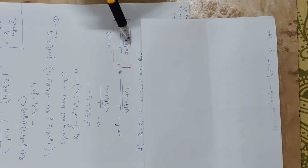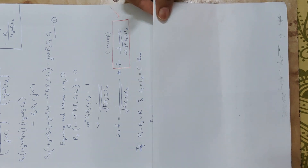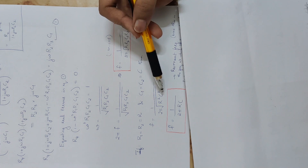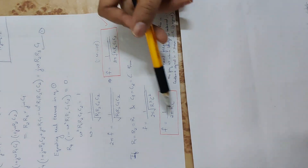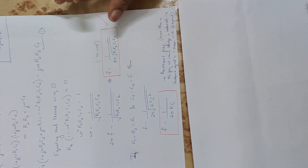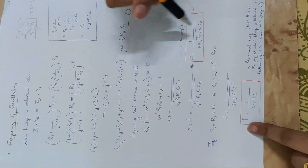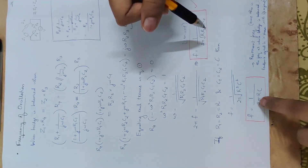This is the frequency of oscillation of the Wien Bridge oscillator — an important result. For the special case where R1 = R2 = R and C1 = C2 = C, the formula simplifies to f = 1/(2πRC). This is the resonant frequency at which the bridge is balanced.